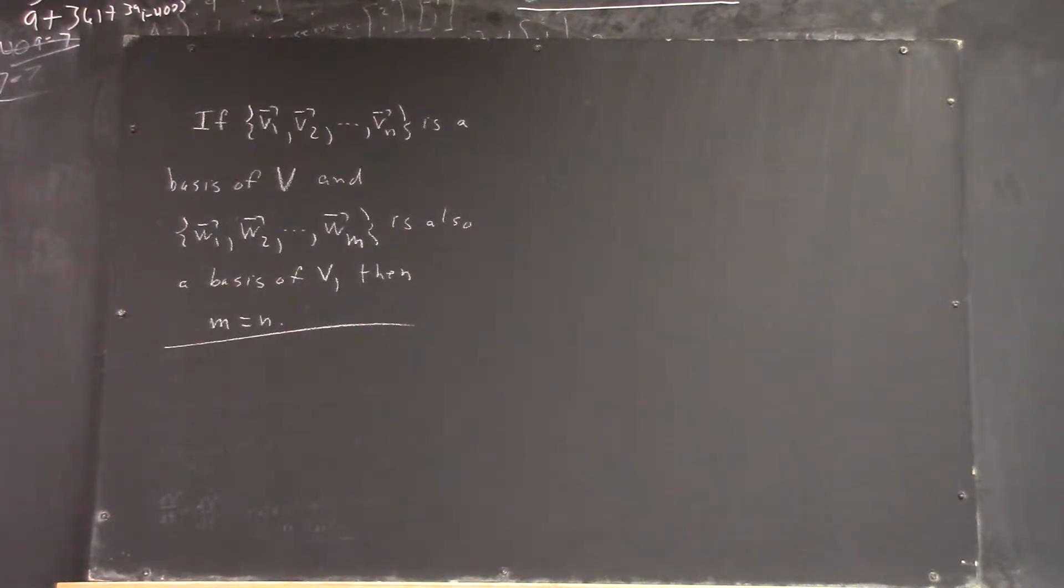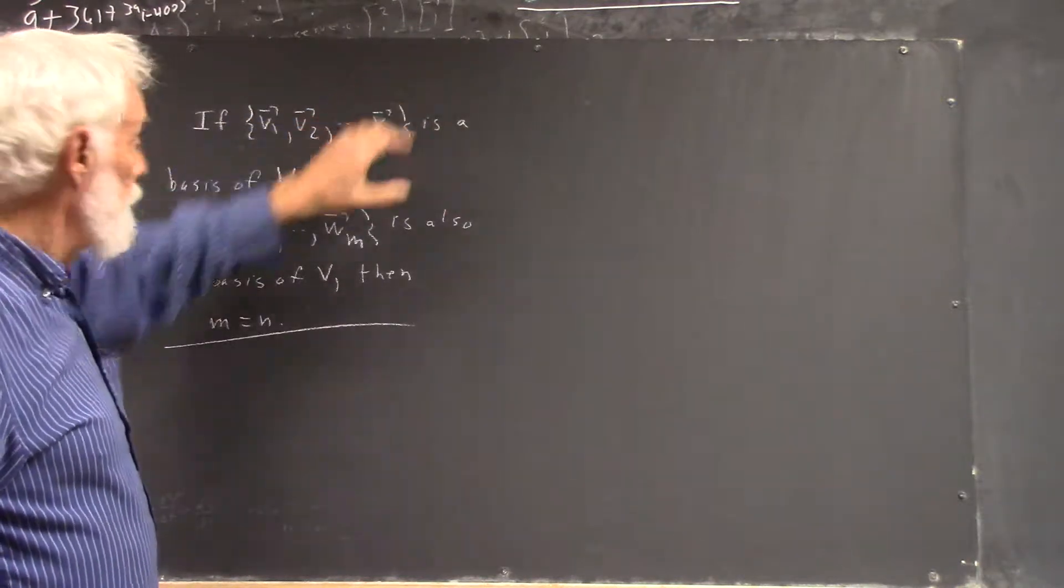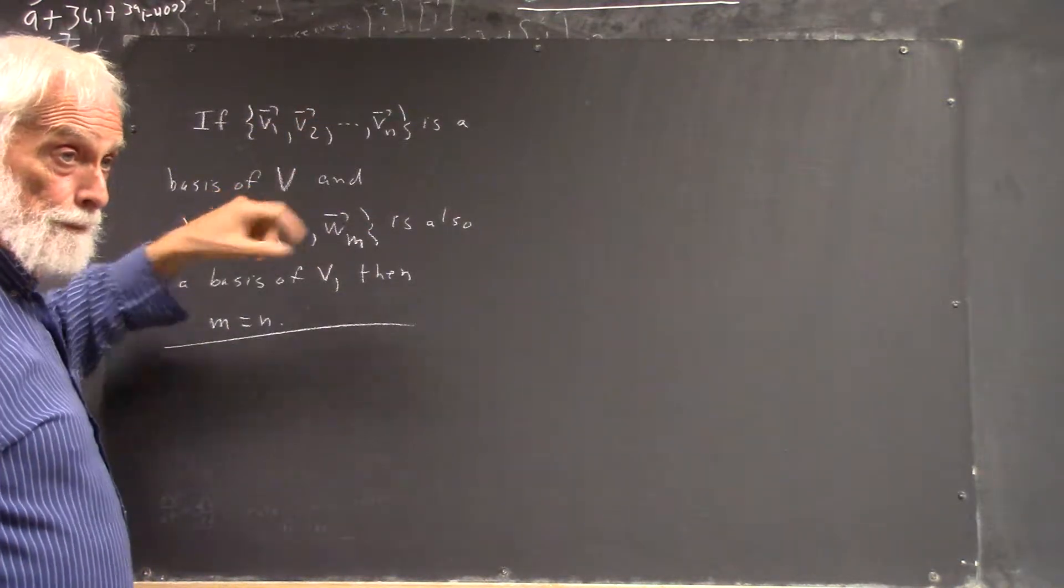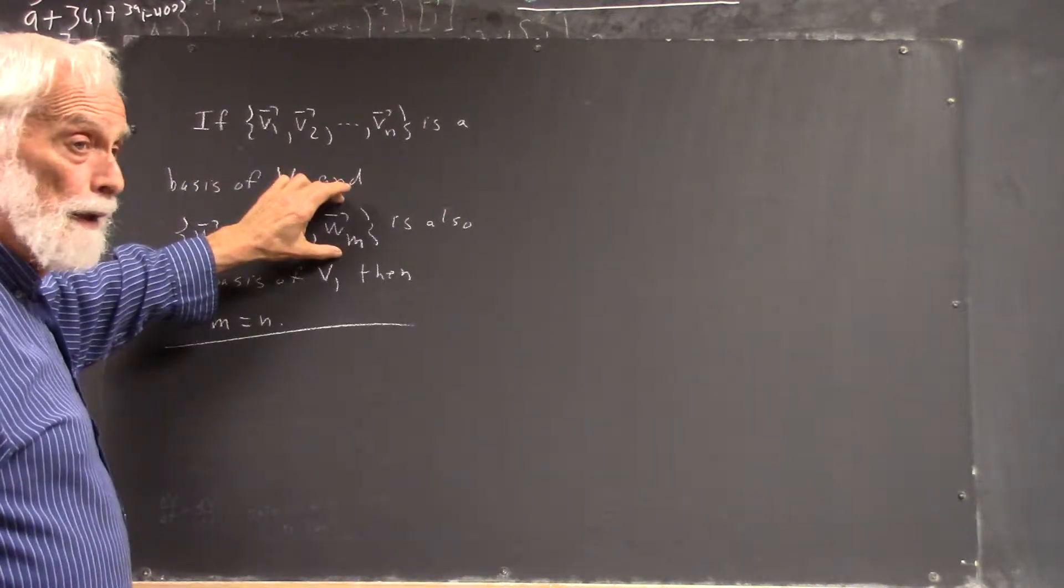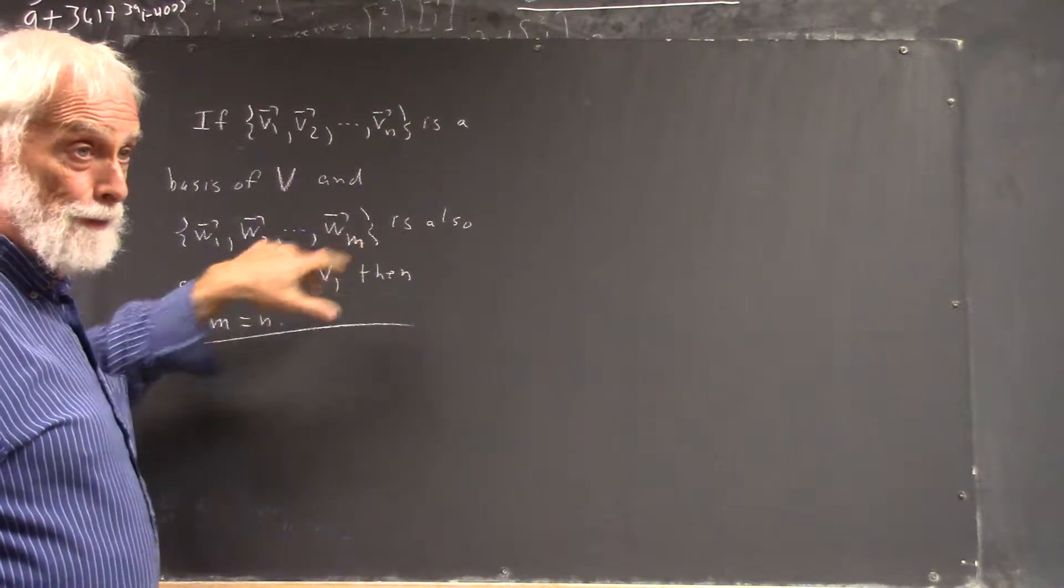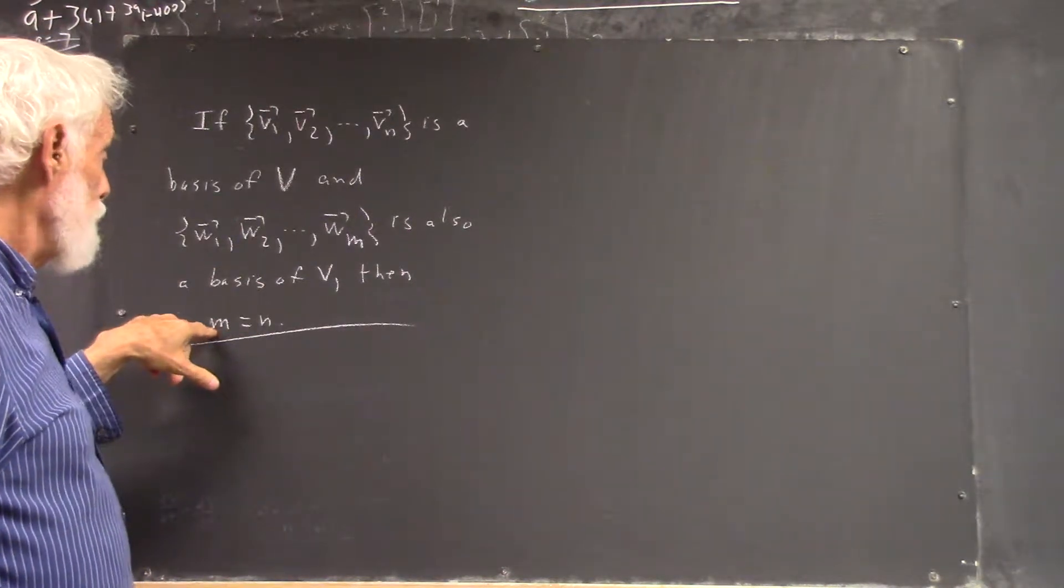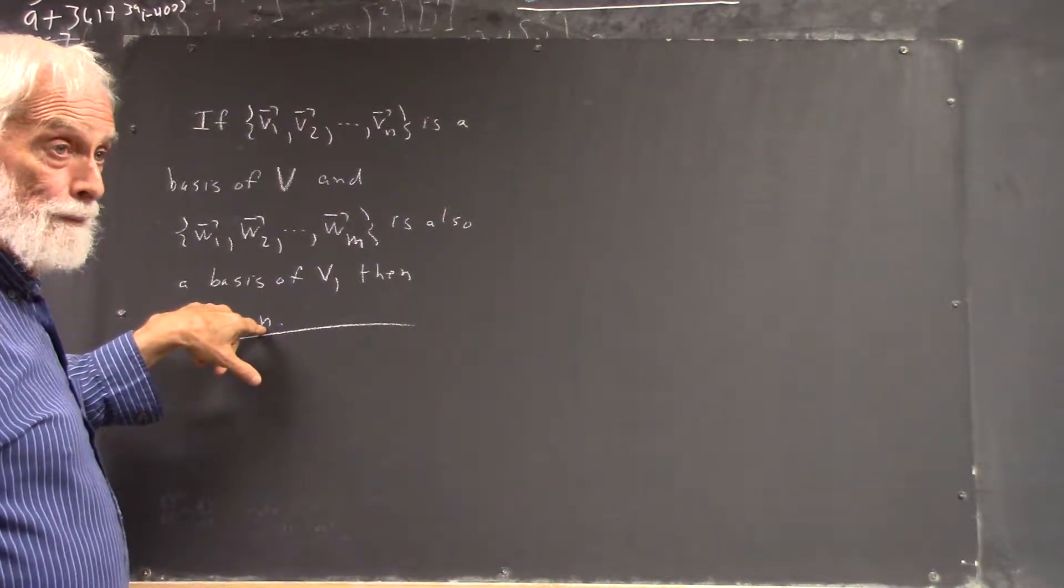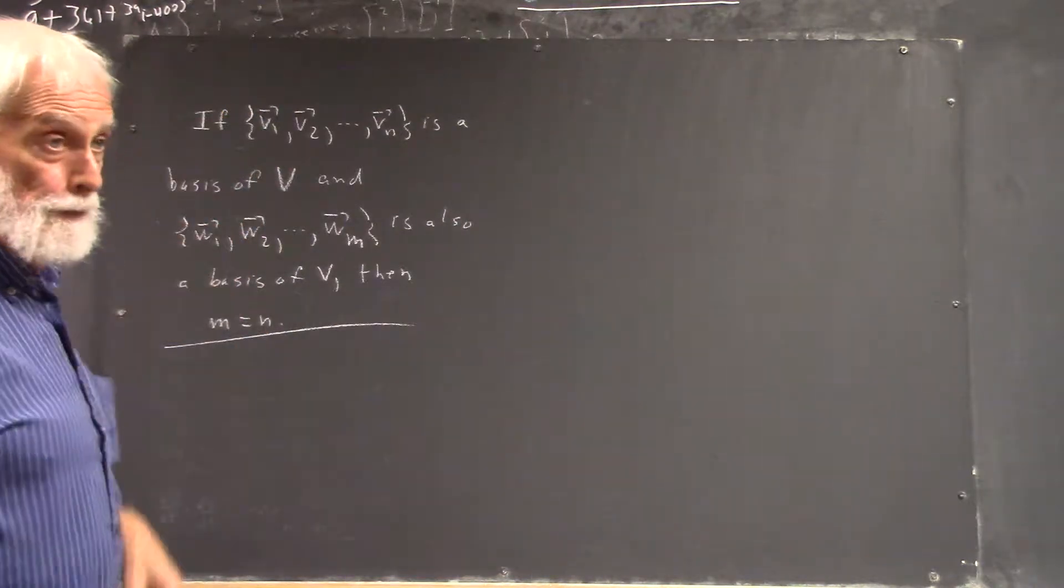Okay, now what we're going to say is that v1 through vn is a basis of a vector space V, and w1 through wm is also a basis of V, then m has to equal n. In other words, every basis of V has the same number of vectors.